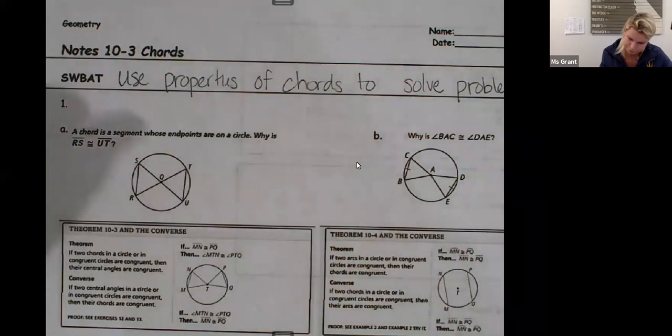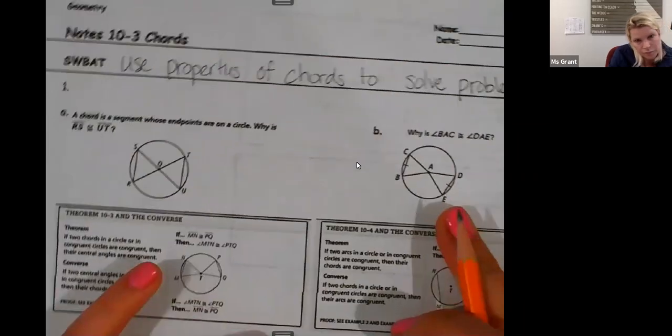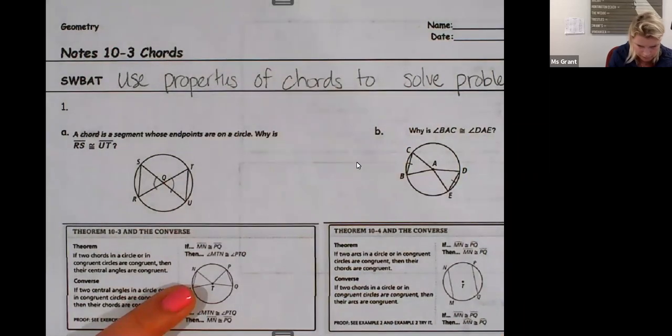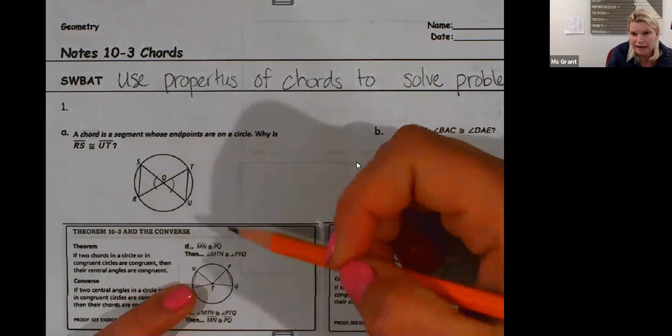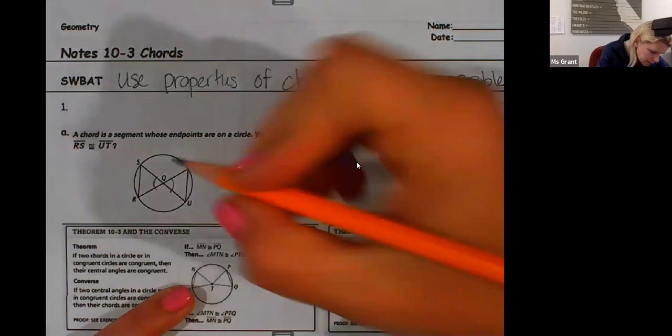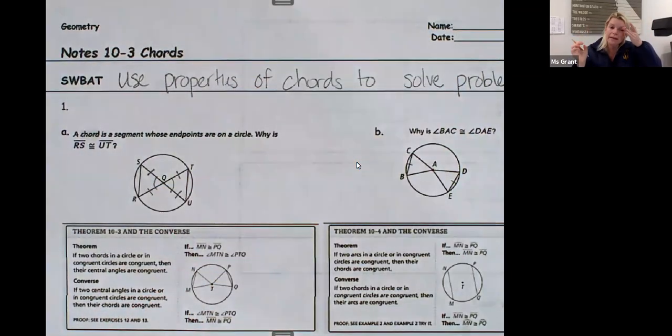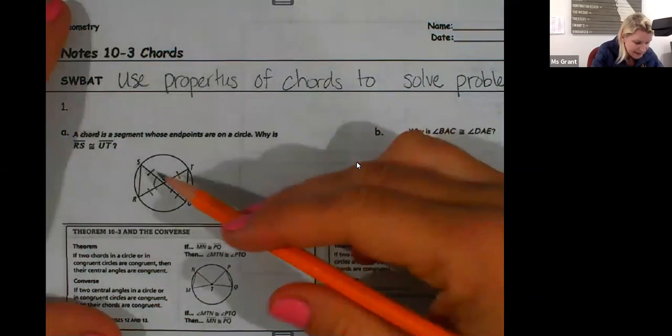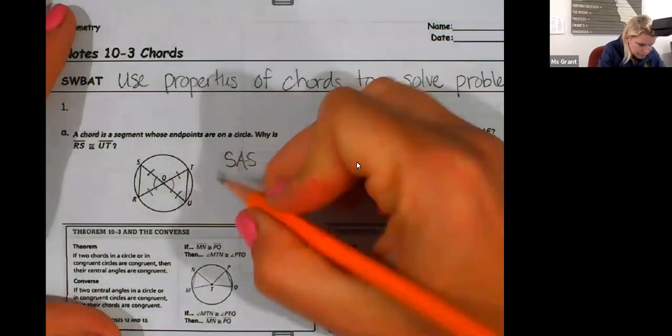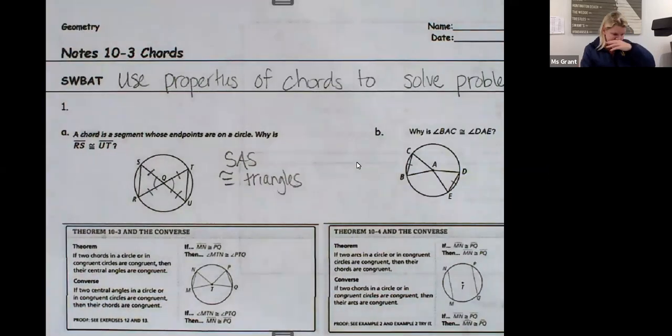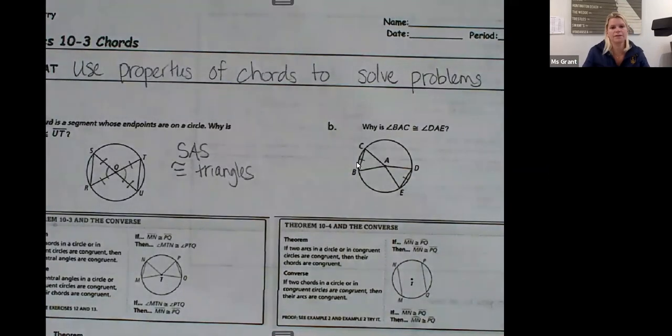Because this forms triangles, right? So you look at it, I for sure have vertical angles, don't I? And then aren't all the radii congruent? Congruent, congruent, congruent, congruent, right? So that means that side and side, there's congruent triangles that are formed. Okay, so side and side.